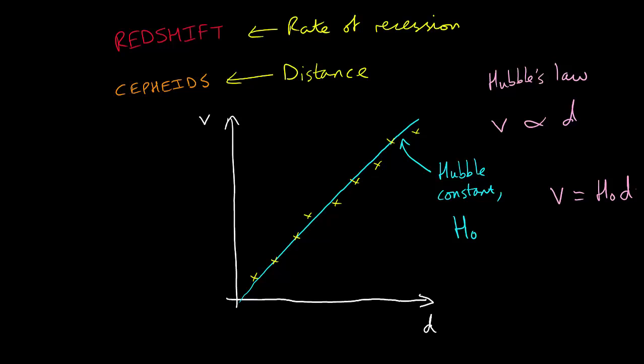The Hubble constant represents the current rate of expansion of the universe. It's important to recognize that the Hubble constant is not actually constant. It's only the current rate of expansion. We'll explore how this changes in a later video.